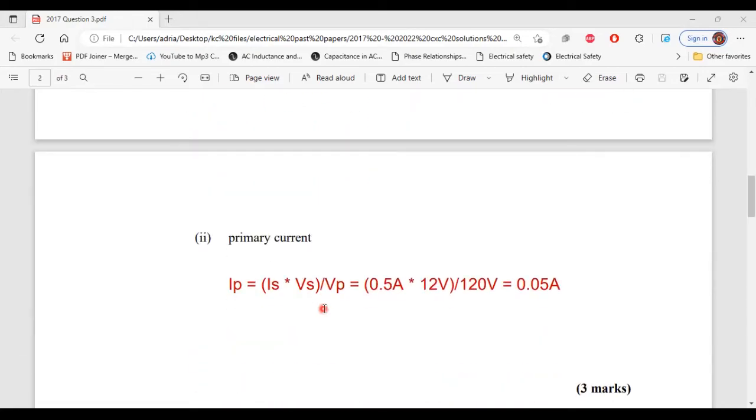Part two says to calculate the primary current. IP equals IS multiplied by VS divided by VP, which equals 0.5 amps multiplied by 12 volts divided by 120 volts. That gives us 0.05 amps, and that is the primary current. That's it for part two of B.